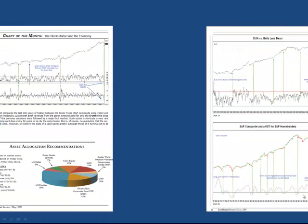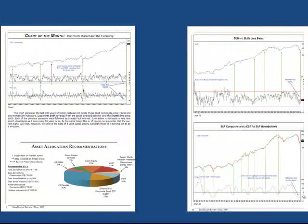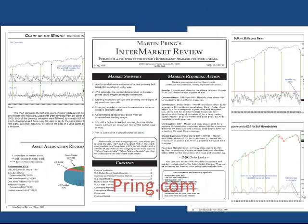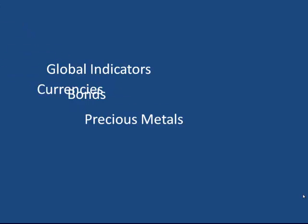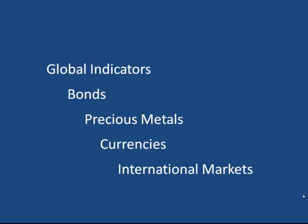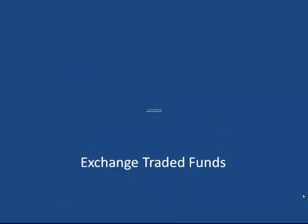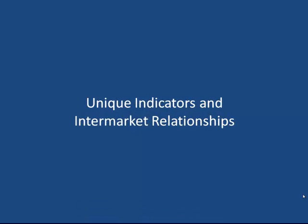If you've enjoyed this presentation, you might want to go to pring.com and download a sample copy of our Intermarket Review — a monthly roundup of the world's principal financial markets with a special emphasis on the U.S. We also look at global indicators, bonds, precious metals, currencies, and international markets, using ETFs to execute our strategies as much as possible. You'll find unique indicators and intermarket relationships you cannot find anywhere else. Thanks for watching, and good luck and good charting.